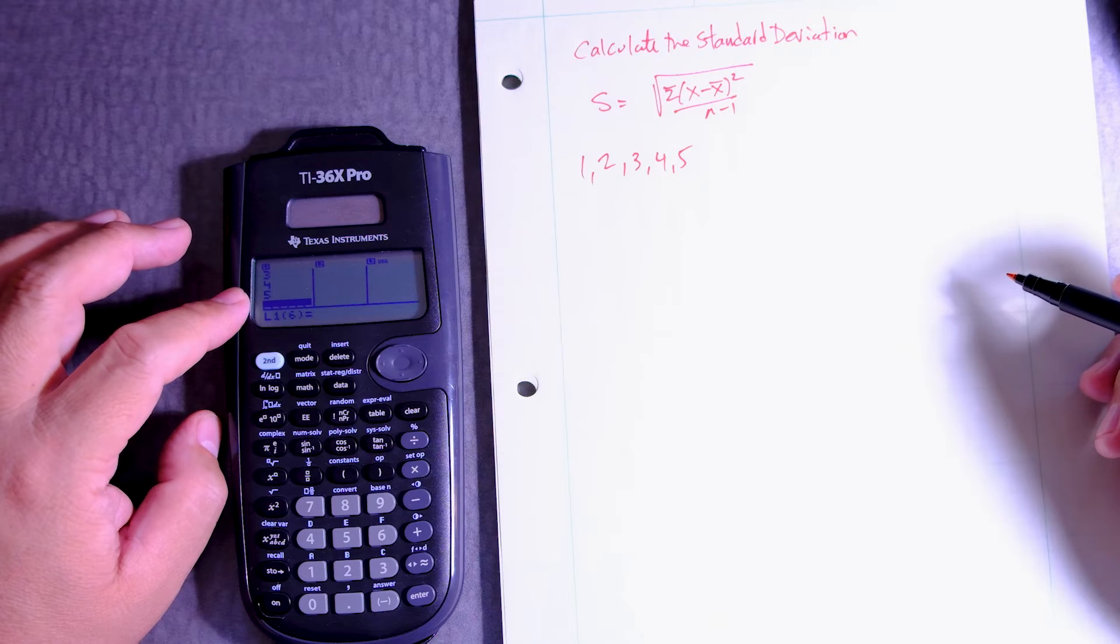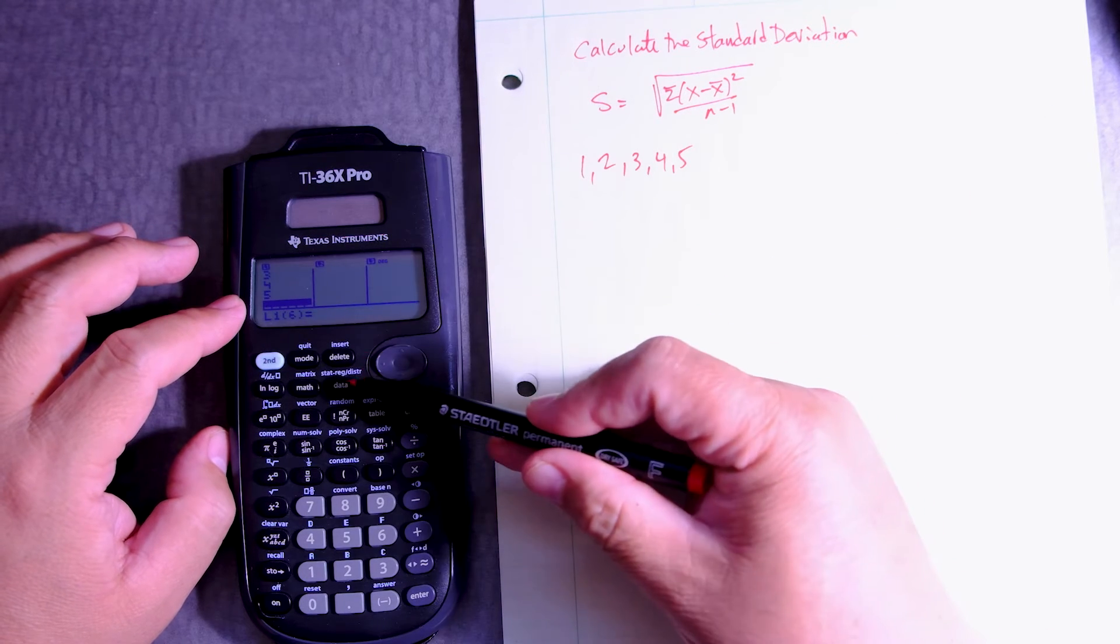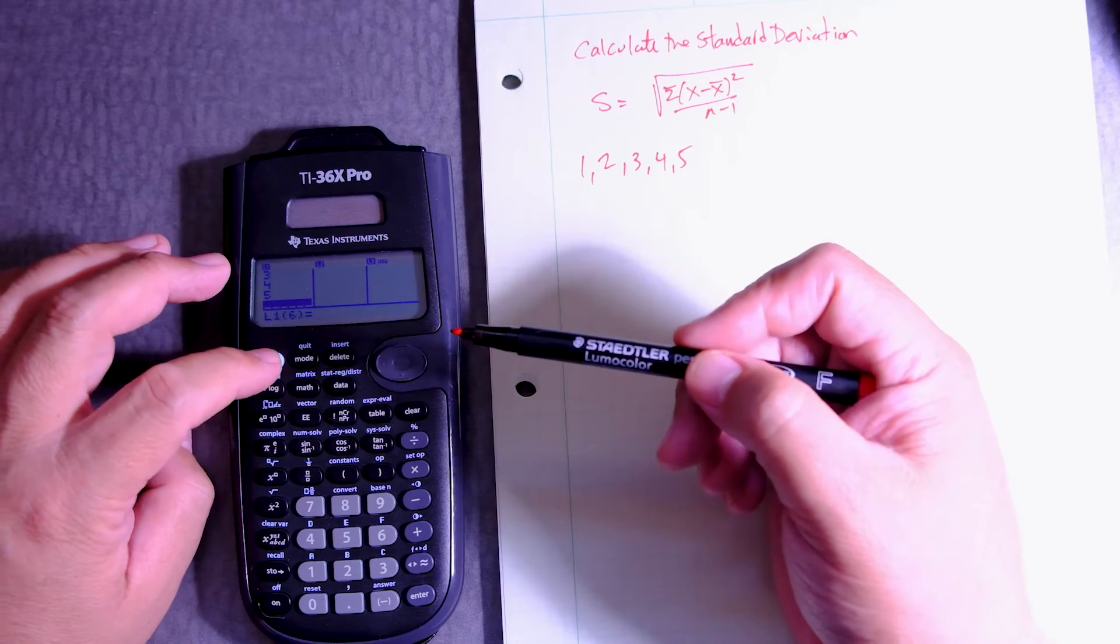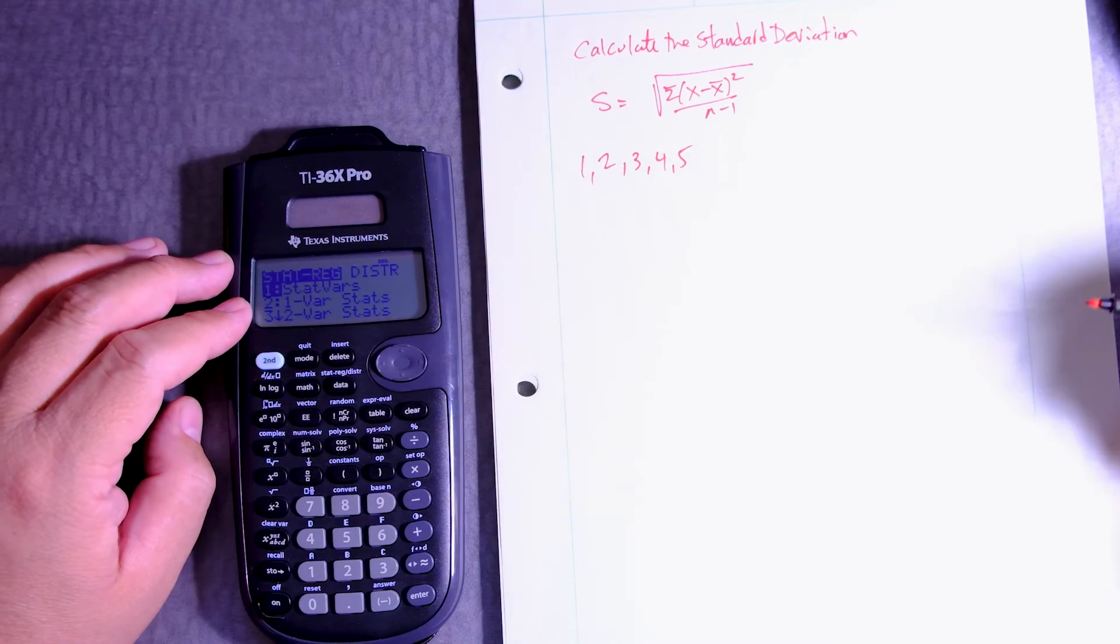So how do I find the standard deviation? Stats, distribution. This is in light blue. Second, data. This gives me a way to calculate that.